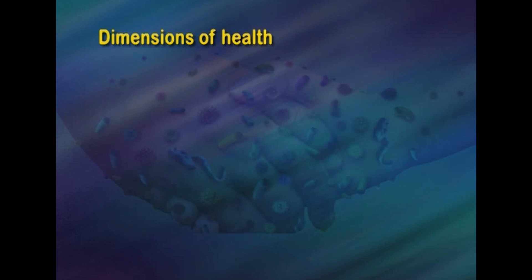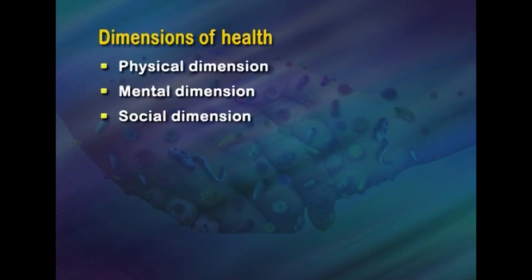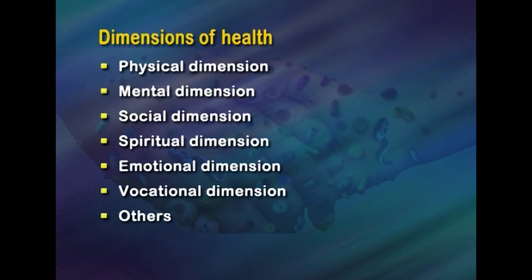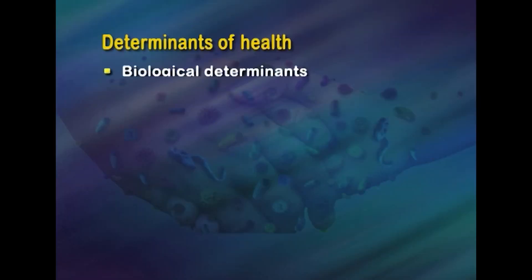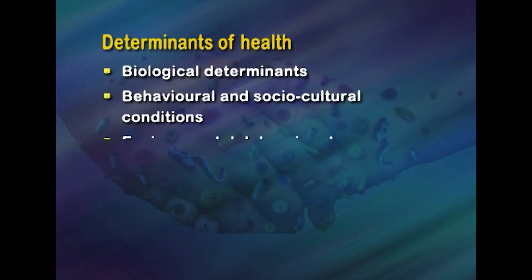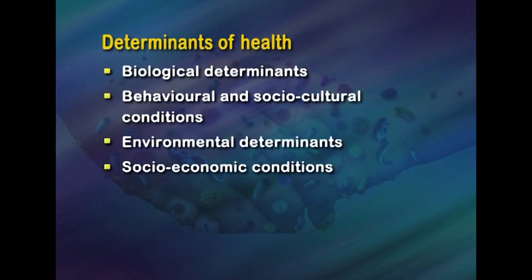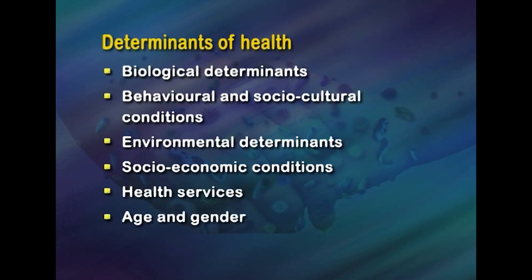To summarize: health is a state of complete physical, mental, and social well-being and not merely an absence of disease or infirmity, with an ability to lead a socially and economically productive life. The dimensions of health include physical, mental, social, spiritual, emotional, vocational, and others. Health is multifactorial, depending on the interplay of complex factors influencing an individual's lifestyle. Both genetic and environmental factors interact with health and may either promote or cause deleterious effects. Determinants of health are biological, behavioral, socio-cultural, environmental, socio-economic, health services, age, and gender.